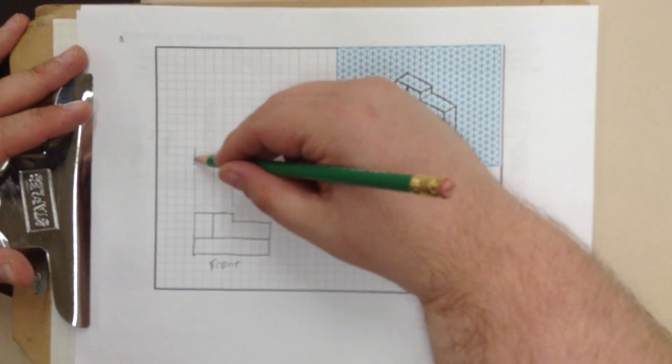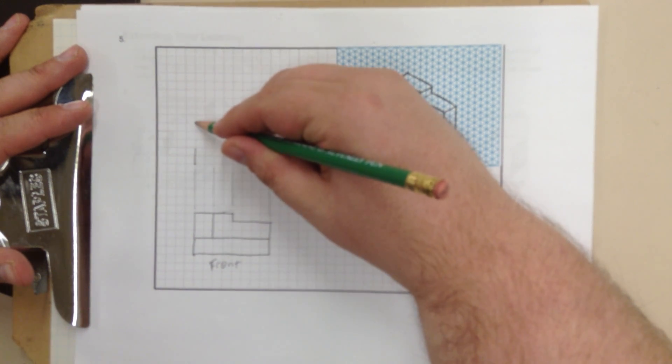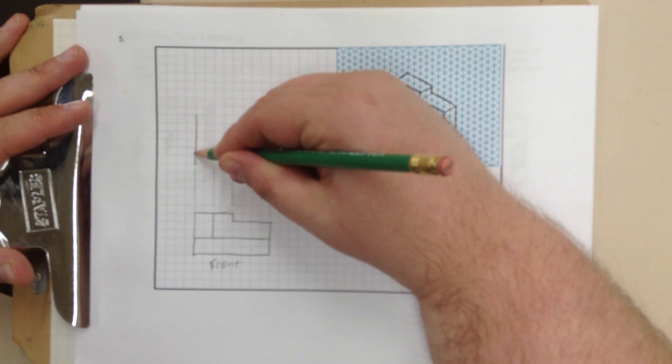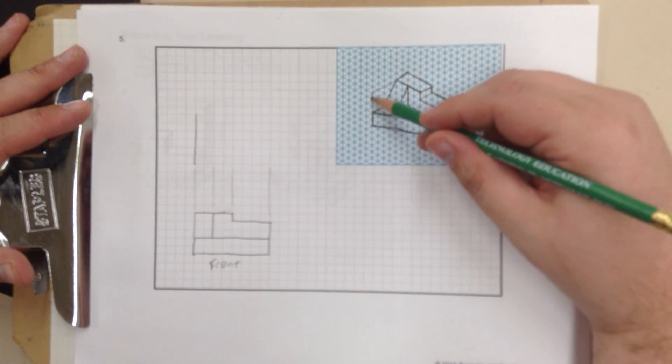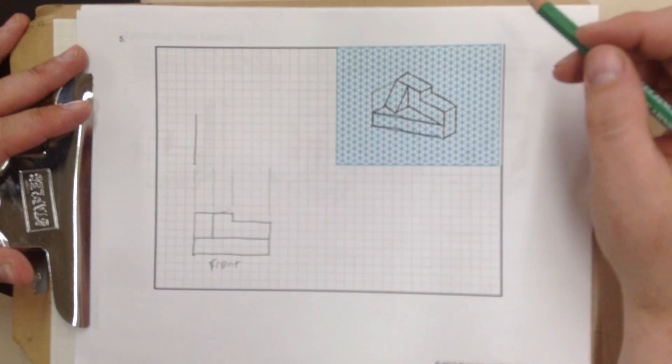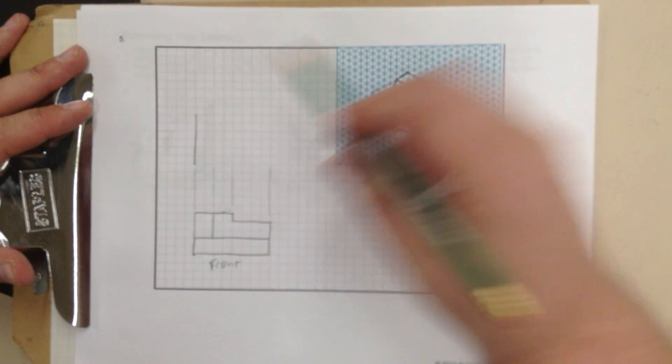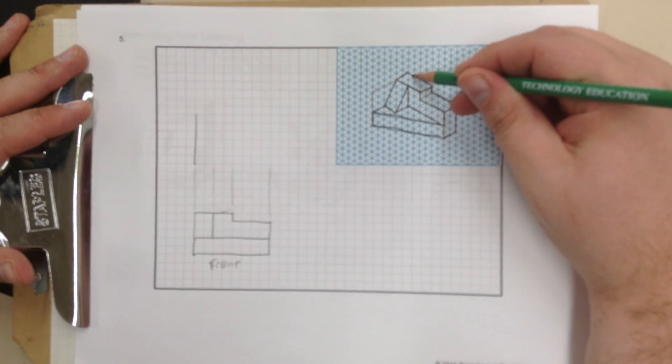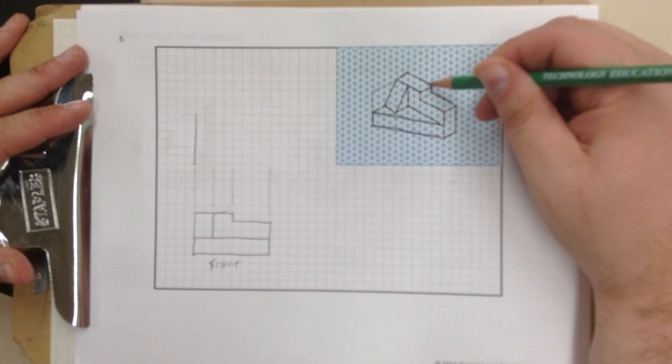So, I'm going to have a rectangle, 1, 2, 3, 4, 5, 6 wide. And in iso drawings, you can always project up to help you count. This back point, which corresponds to that, is 1, 2, 3, 4.